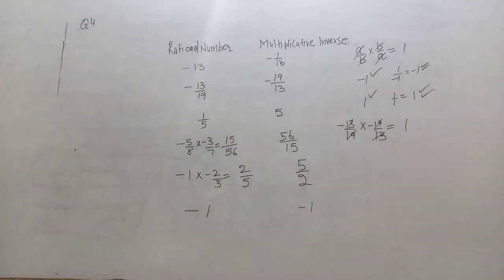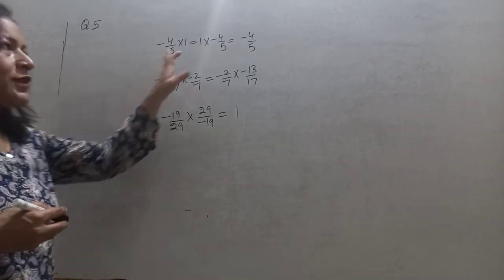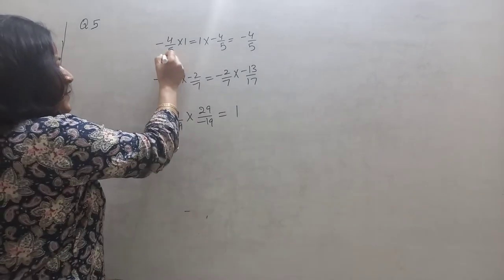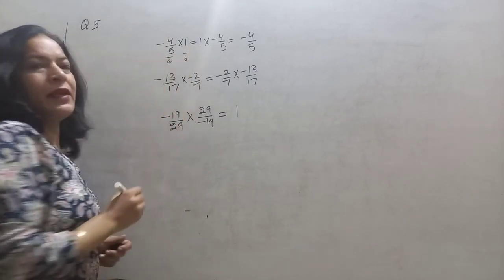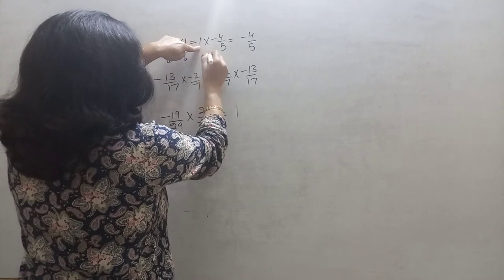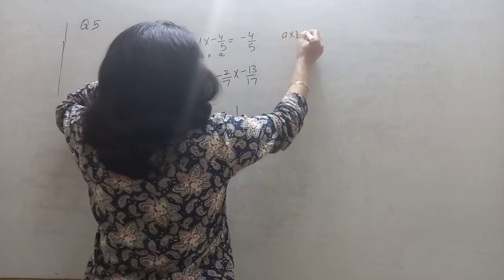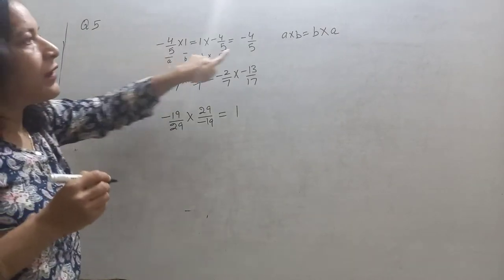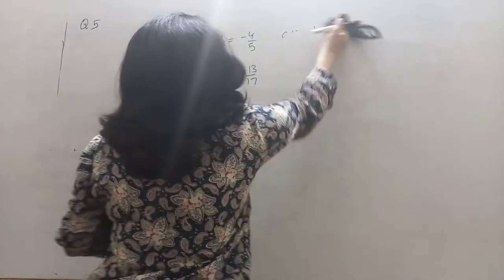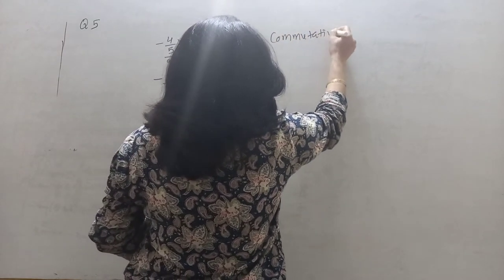In question number 5, you have to identify the name of the property used in each multiplication. If minus 4 upon 5 is A and another number is B, and here it is B first then A — that means A into B equals B into A. Only the order changed, so this is the commutative property.